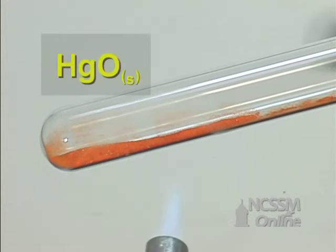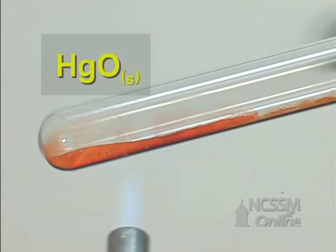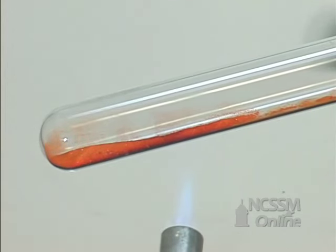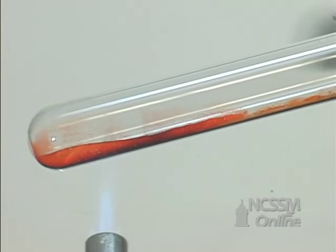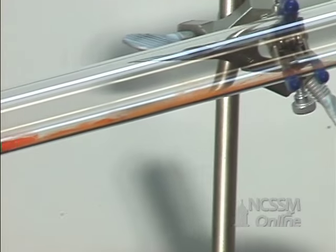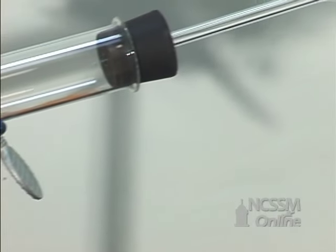In the test tube, we have a sample of red mercury oxide. We will heat the sample and it will decompose to give mercury metal, which will condense at the top of the test tube, and oxygen gas, which we will collect by the displacement of water.